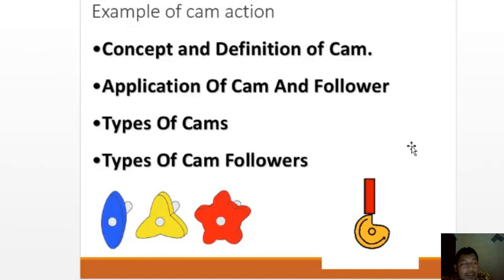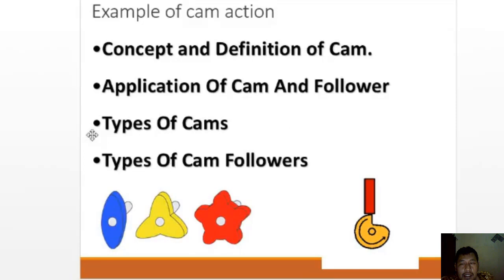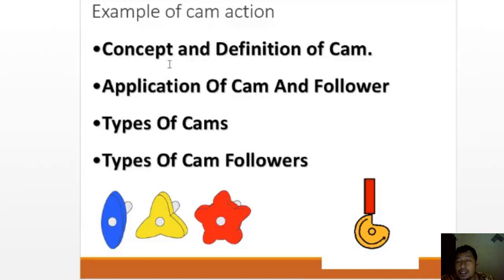Oscillation means moving like a wave. Here are some examples of cam motion. Today we will cover four topics: the concept and definition of cam, applications of cam and follower, types of cams, and types of followers.